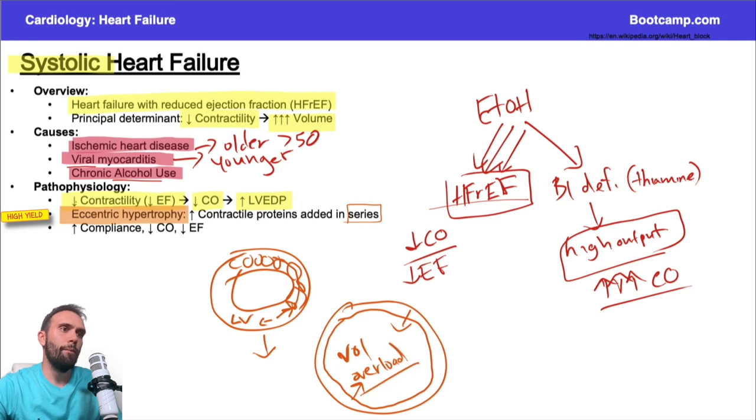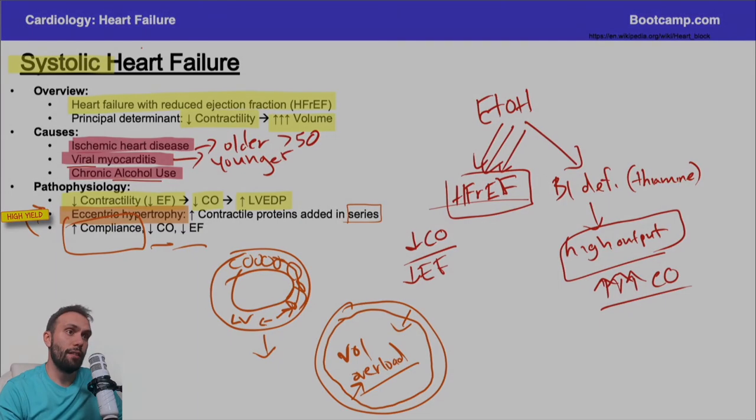This is what happens when we have volume overload. Volume overload, very classically, will come up with this eccentric hypertrophy, increasing contractile proteins added in series. That leads to an increased compliance. I have more blood that I can accommodate in here, but guess what? I can't really eject it out. I have a really poor ejection fraction, really poor cardiac output. And that essentially is systolic heart failure.